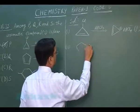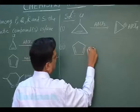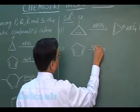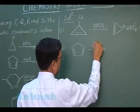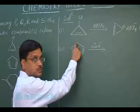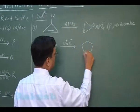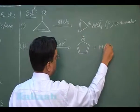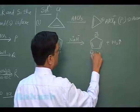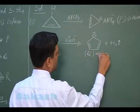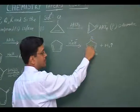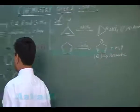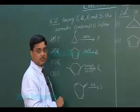Second: when the cyclopentadienyl compound reacts with NaH, H⁻ and Na⁺ are formed. H⁻ is removed from this position and it forms the cyclopentadienyl carbanion, releasing hydrogen gas. This is compound Q, and Q is also aromatic. It has 6 pi electrons in a delocalized state. So another confirmed option is Q.